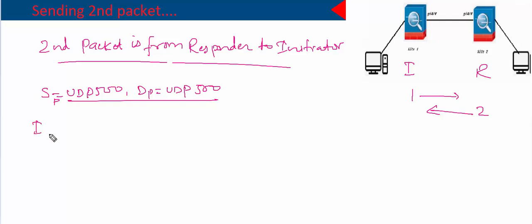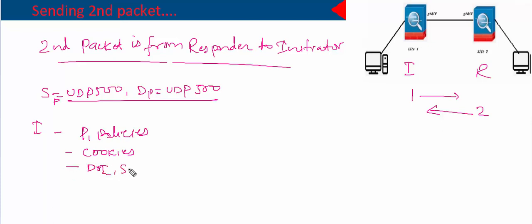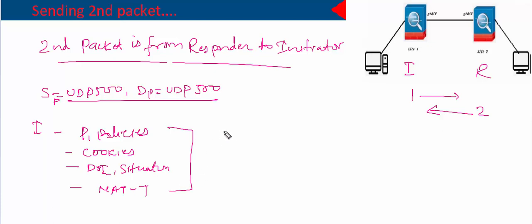If you remember, in the first packet the initiator sends phase one policies. It sends cookies, DOI and situation, and also sends NAT-T types. This was the information sent in the first packet.